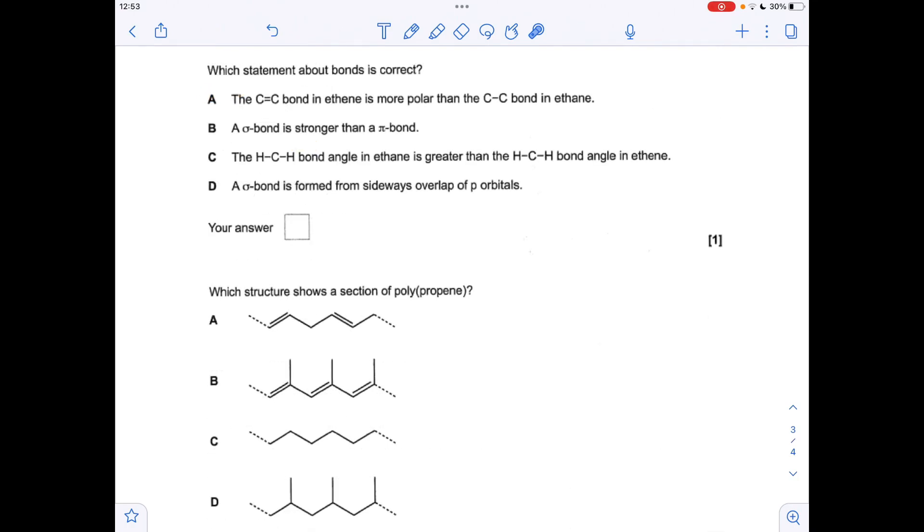Moving on to the next question. So which statement about bonds is correct. The C-C bond in ethene is more polar than the C-C bond in ethane. Well that's not true. Because carbon has the same electronegativity. So the bond isn't polar. A sigma bond is stronger than a pi bond. Yep that is true. So B is the answer.